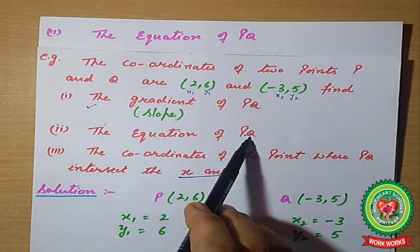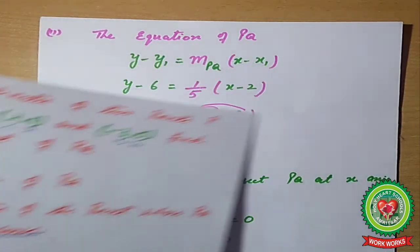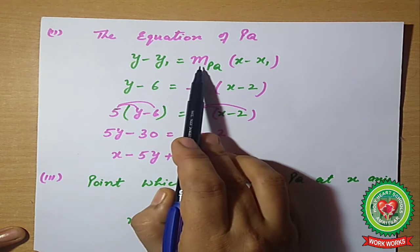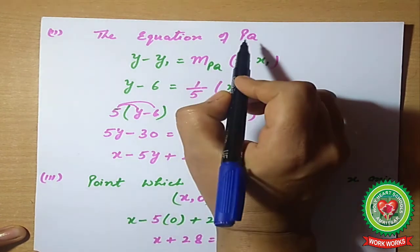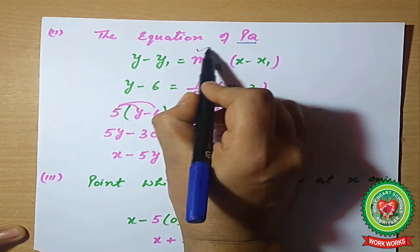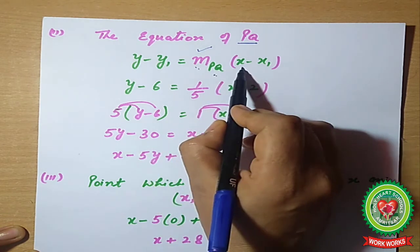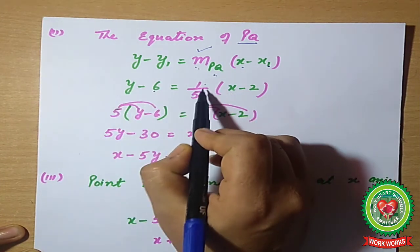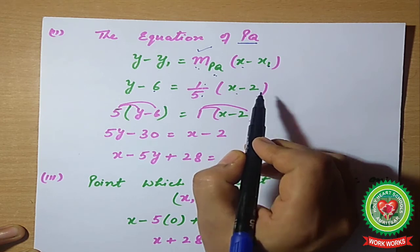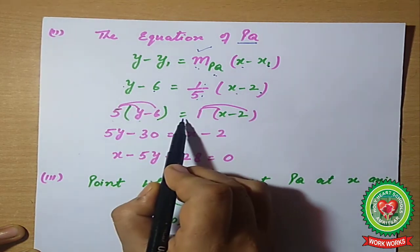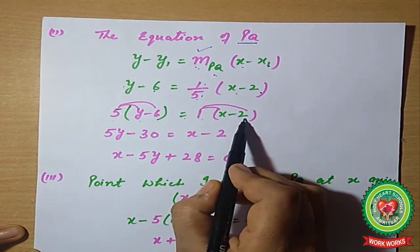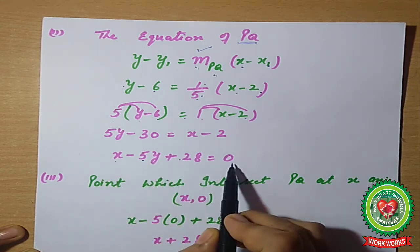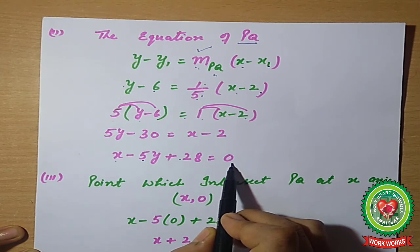Now for the second part, finding the equation of PQ. We apply y − y₁ = m·(x − x₁), giving y − 6 = (1/5)(x − 2). Cross-multiplying: 5(y − 6) = x − 2. Applying the distributive method, we get the equation x − 5y + 28 = 0.